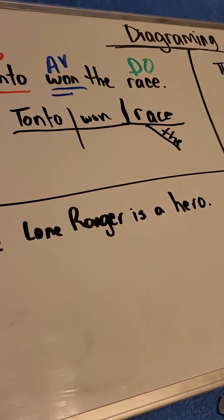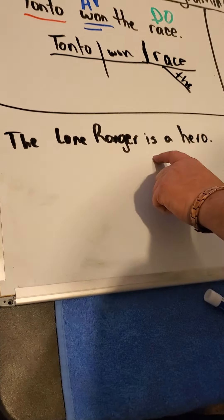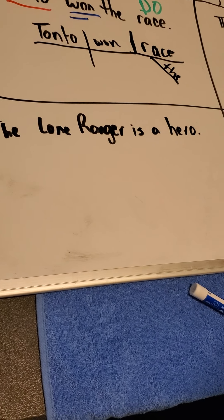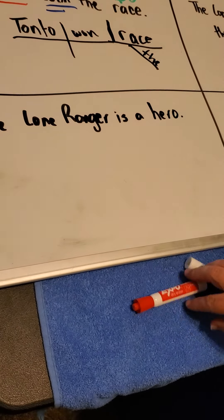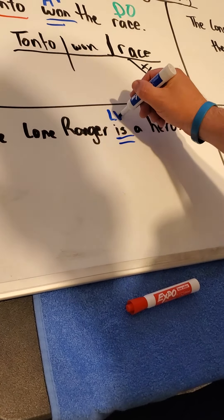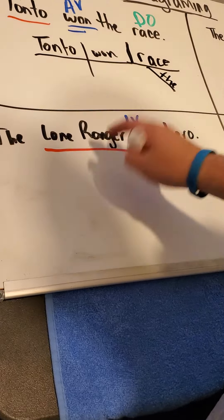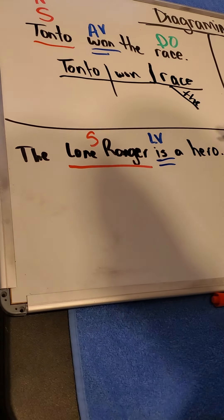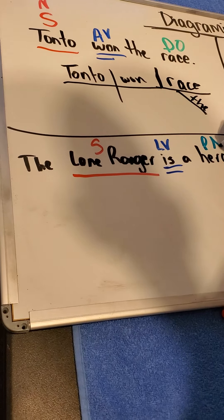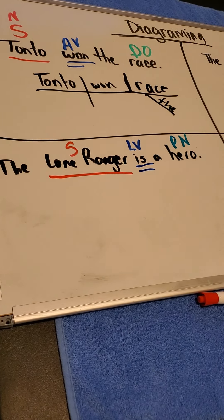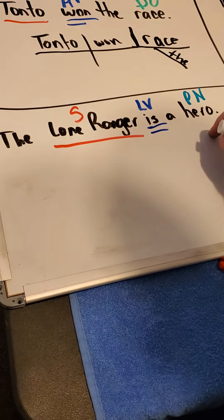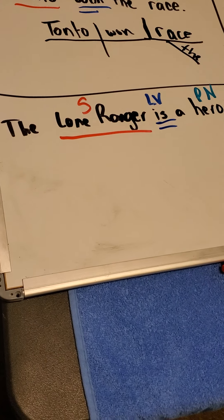Remember there's no punctuation in a diagram. Okay, let's do this one next. The Lone Ranger is a hero — technically I guess it would be 'was a hero.' Again, I'm going to find the verb. Am, is — oh, there it is. Is. It's on the list, so it's a linking verb. Who is? Lone Ranger. They're both capitalized so it's a proper noun. Lone Ranger is the subject. Lone Ranger is what? Hero. This one is the predicate nominative because it renames the subject. I can change this to equals: Lone Ranger equals hero. That tells me it renames it, and that's how I'm going to diagram it.